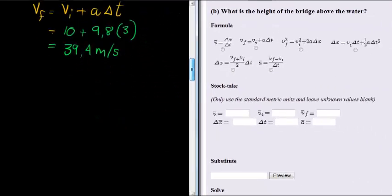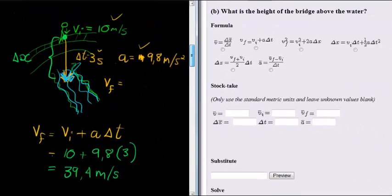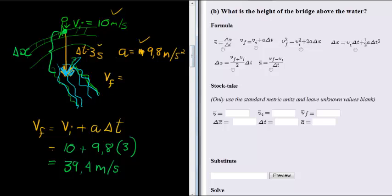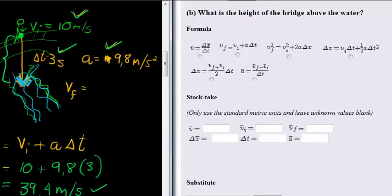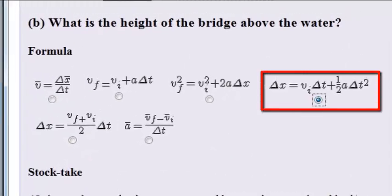With that, we know that we already have three or four values. We have future velocity, initial velocity, acceleration, and the time it takes. Again, I don't want to use future velocity simply for the fact that I might have made a mistake, so I want a formula with initial velocity, acceleration, Delta T, and Delta X.